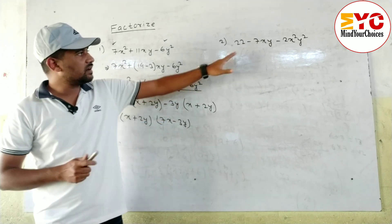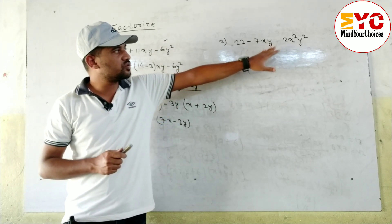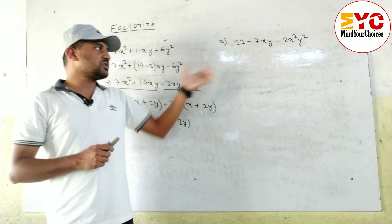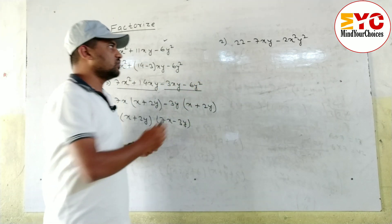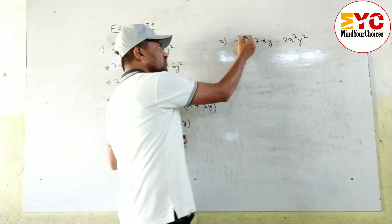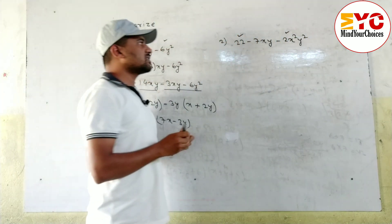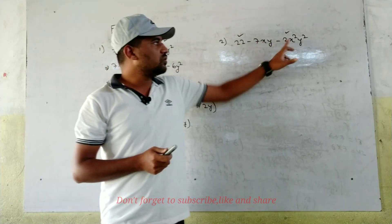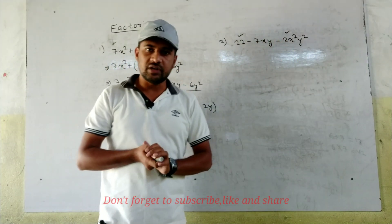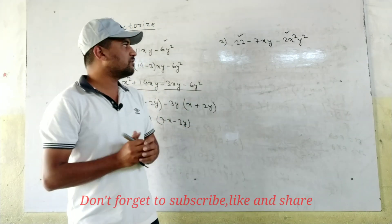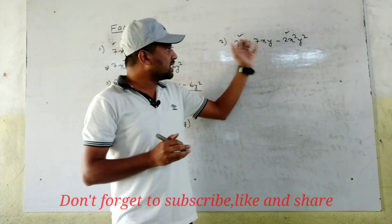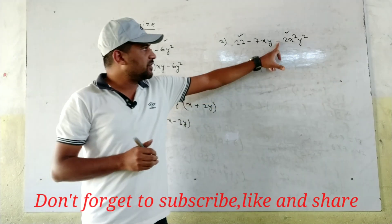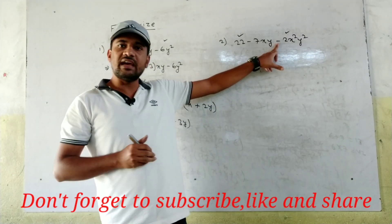Now look at the second question: 22 - 7xy - 2x²y². The process is the same. First, we multiply the first and last numbers: 22 × 2 = 44. We need to find factors whose multiplication is 44 and subtraction is 7.